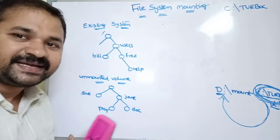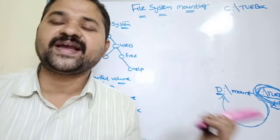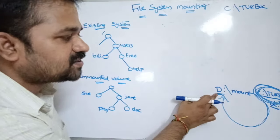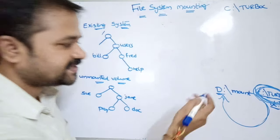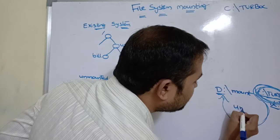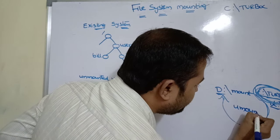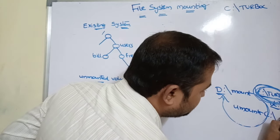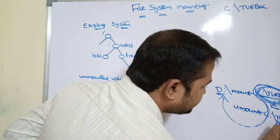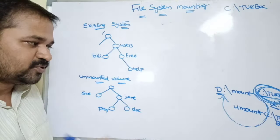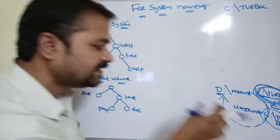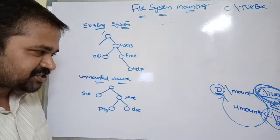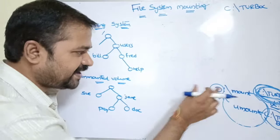Unmounting means detaching files from the file system — removing files from the file system — so that at this path we no longer have the C colon slash TurboC files. To perform unmounting we use the command umount space C colon slash TurboC. This will detach and remove the Turbo C folder from the D file system, making it no longer accessible at D.